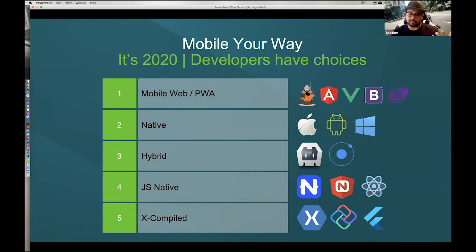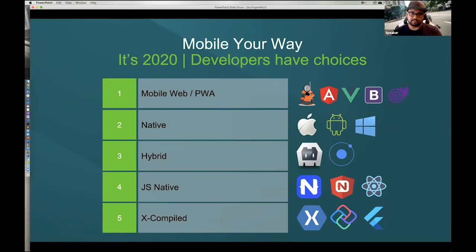Then we have the cross-compile story, where Xamarin has been the prominent player for several years. We also just had a talk on Flutter, and there are things like Uno Platform — lots of open-source frameworks that let you write higher-level languages compiled down to native UI with native performance and full access to the native API stack. These are the broad general ways to build for mobile today, and it's great that we have so much choice.